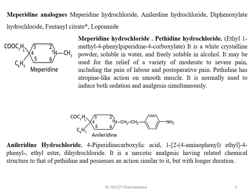The second class of narcotic analgesics is the meperidine analogs. The first drug is pethidine, also called meperidine hydrochloride. Meperidine contains a piperidine ring to which a methyl group is attached at the first position; it is ethyl-1-methyl-4-phenyl-piperidine-4-carboxylate. It is used to relieve a variety of moderate to severe pain, including pain of labor and post-operative pain. Pethidine has an atropine-like action on smooth muscle and is used to induce both sedation and analgesia simultaneously.